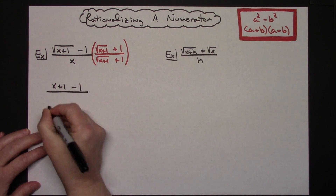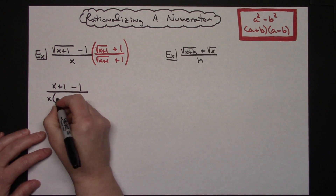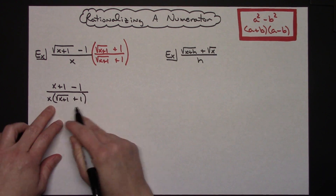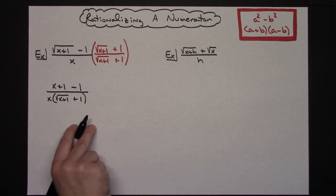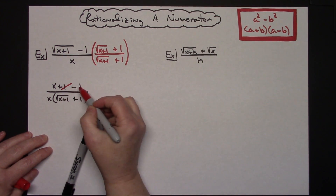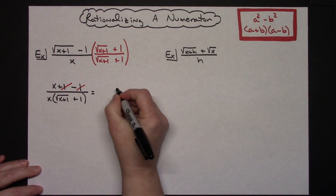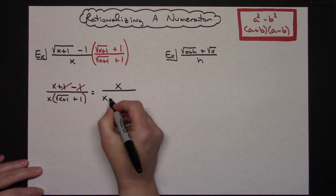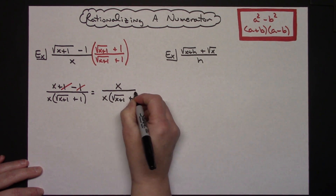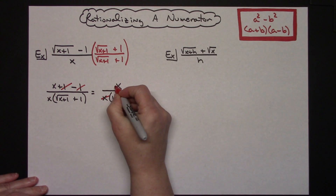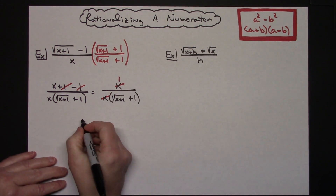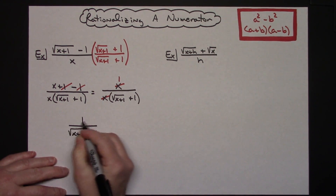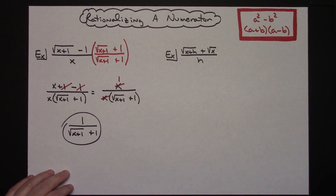On the bottom I'm going to leave the x there, times the quantity of the square root of x plus 1, plus 1. I do not want to multiply that out in a hurry because hopefully things are going to cross out nicely. The x plus 1 minus 1 in the numerator simplifies — that 1 minus 1 goes away. That leaves just x on top, and that x crosses out with the x in the denominator, leaving 1 in the numerator. So the final simplified answer is 1 over the square root of x plus 1, plus 1.